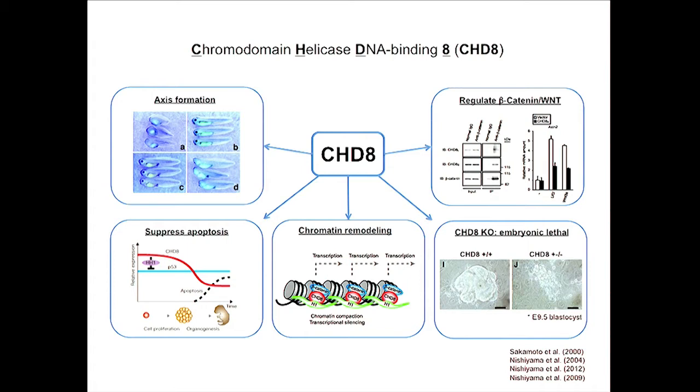CHD8 also has chromatin remodeling function where it modulates transcription. Additionally, CHD8 knockout mice die very early during development, suggesting that CHD8 is important for early embryonic survival. We became particularly interested in CHD8 because of its role in regulating the Wnt signaling pathway, and therefore we hypothesized that CHD8 regulates brain development through regulating Wnt signaling.